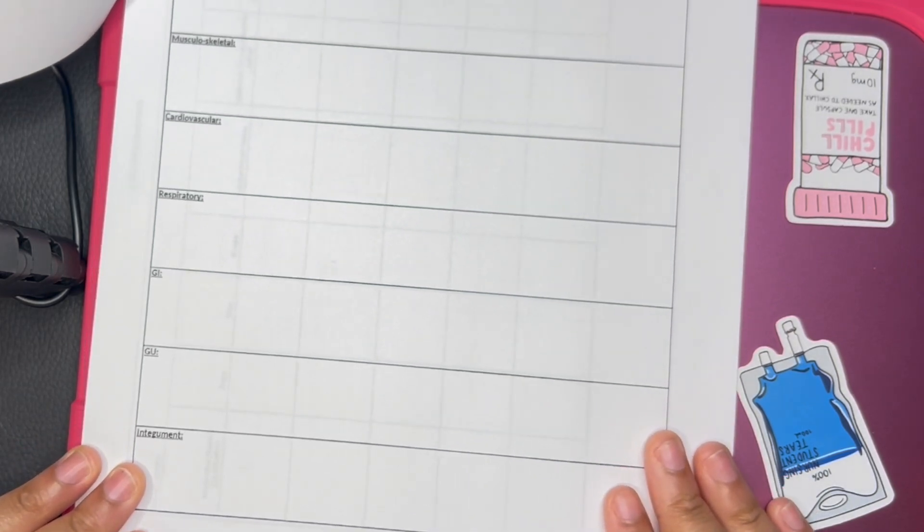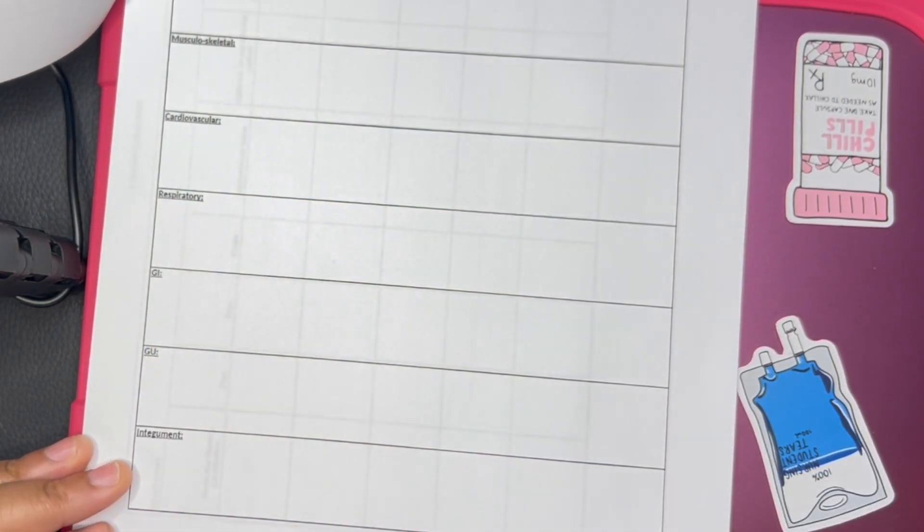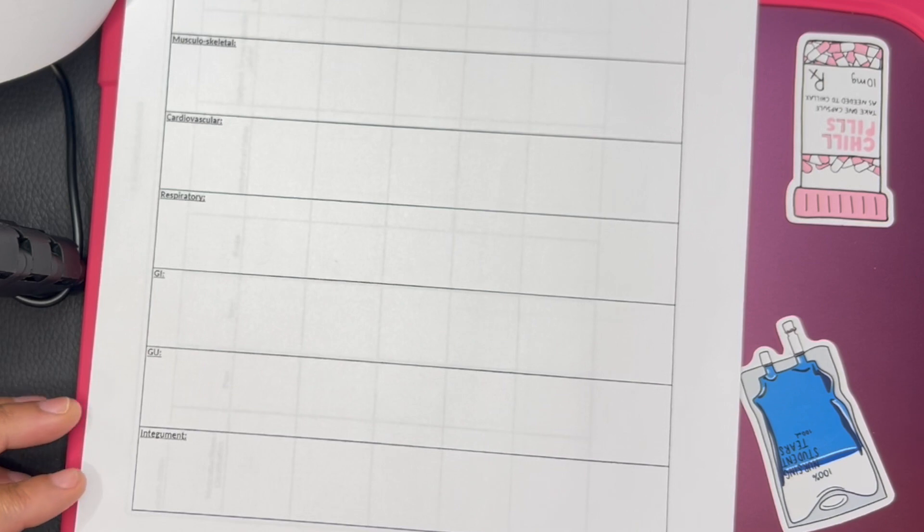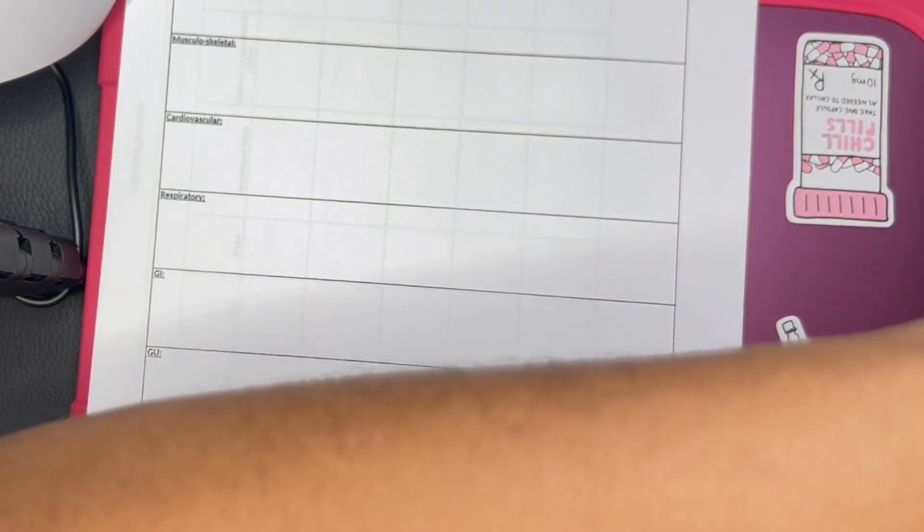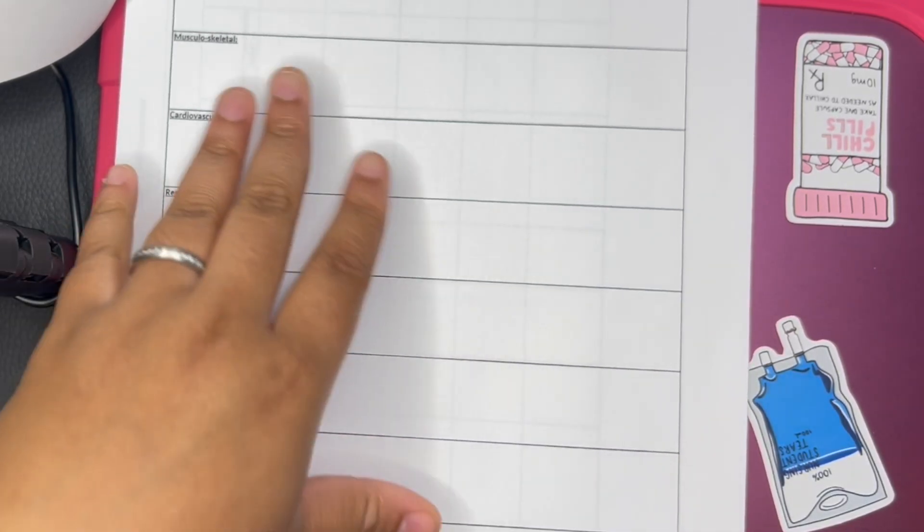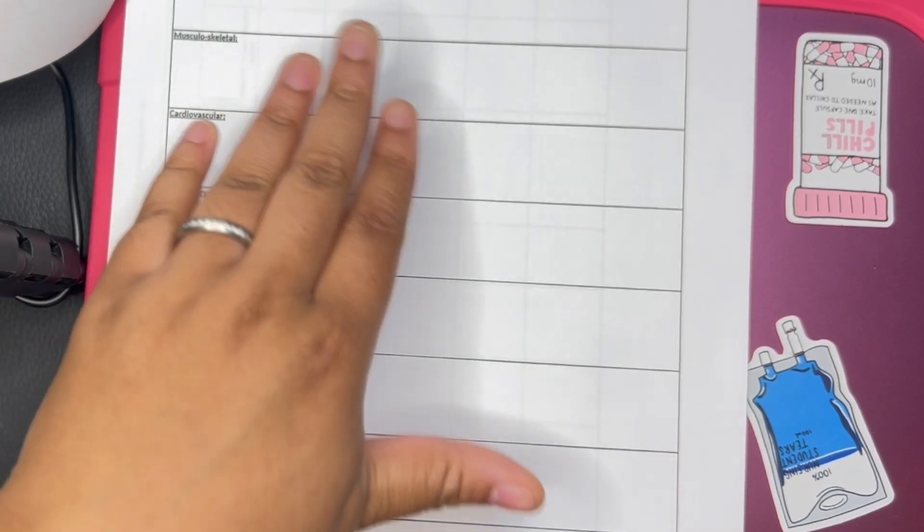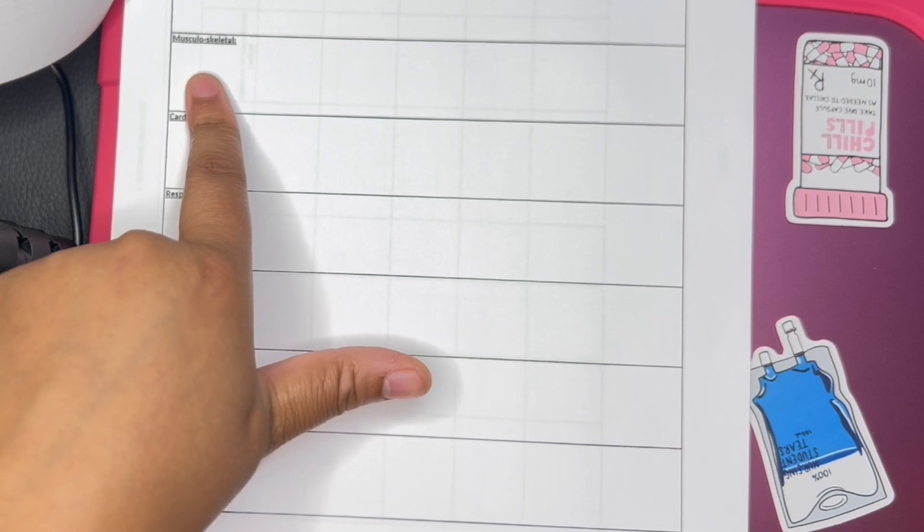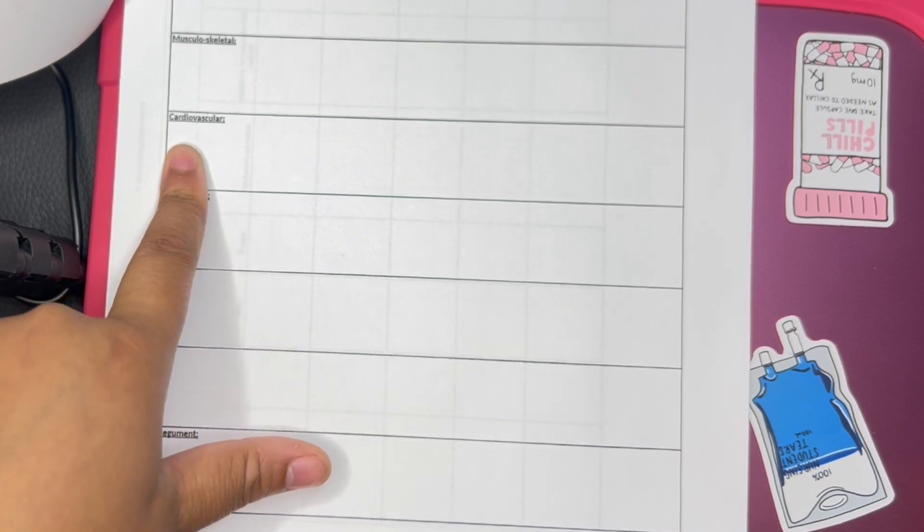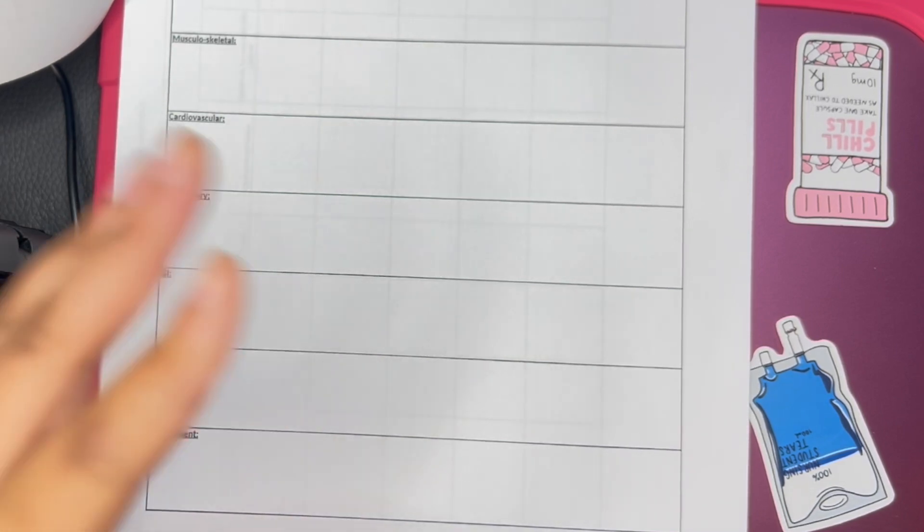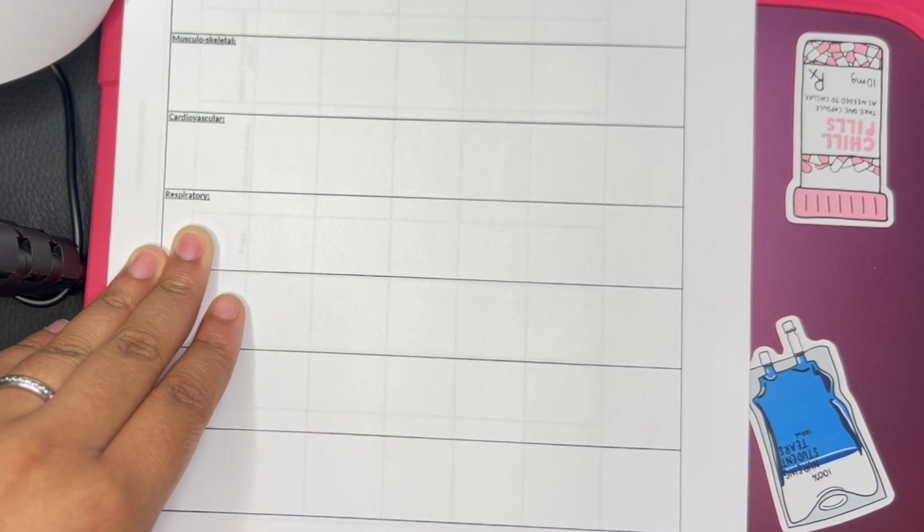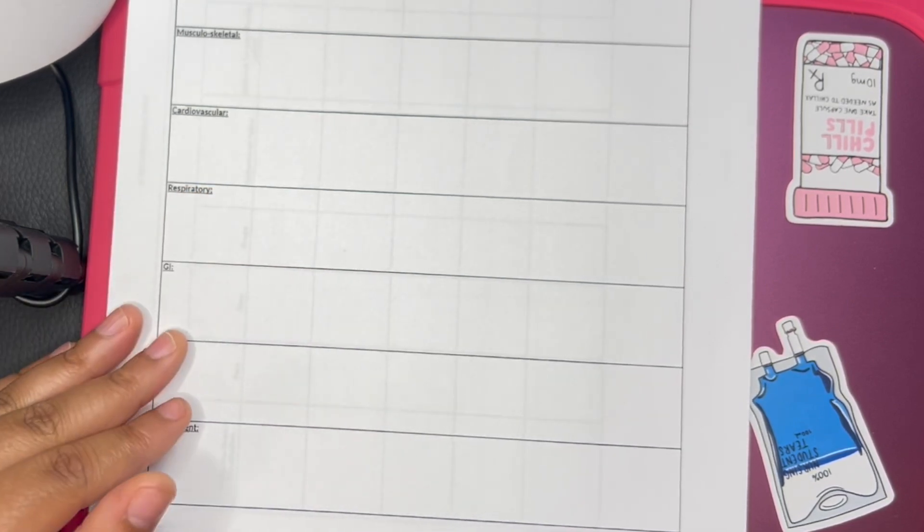Then this goes to your head-to-toe assessment. Far as the neuro mental status, like was the patient oriented to place, person, place, time. You basically put their fall score, pupil dilation. These are different sections like musculoskeletal, their range of motion, cardiovascular, what type of sinus rhythm they're in, respiratory, you'll put like what did their breath sounds sound like.